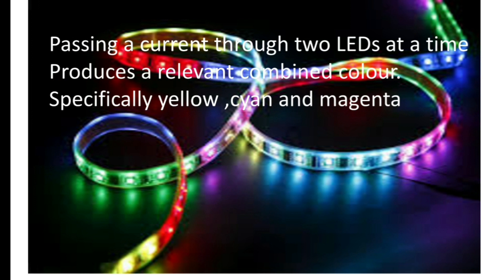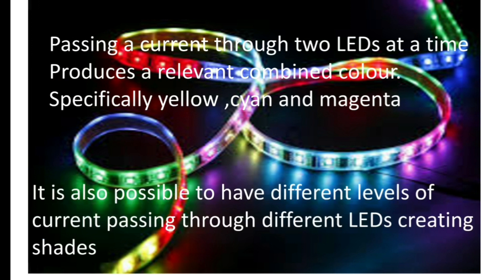Passing a current through two LEDs at a time produces a relevant combined color, specifically yellow, cyan, and magenta. It is possible to have different levels of current passing through different LEDs creating shades.